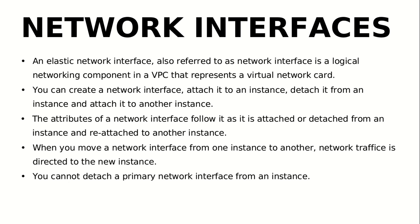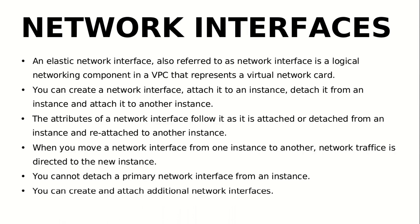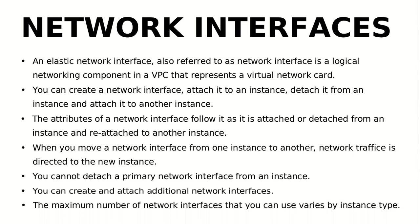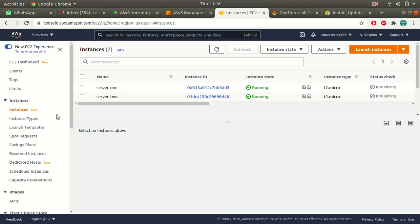By default you cannot detach the primary network interface of an instance. Whenever you launch instances you get a primary network interface and you cannot detach it. You can only work with secondary network interfaces — creating, attaching, and detaching can be done only with secondary network interfaces. The maximum number of network interfaces you can attach depends on the instance type you select.